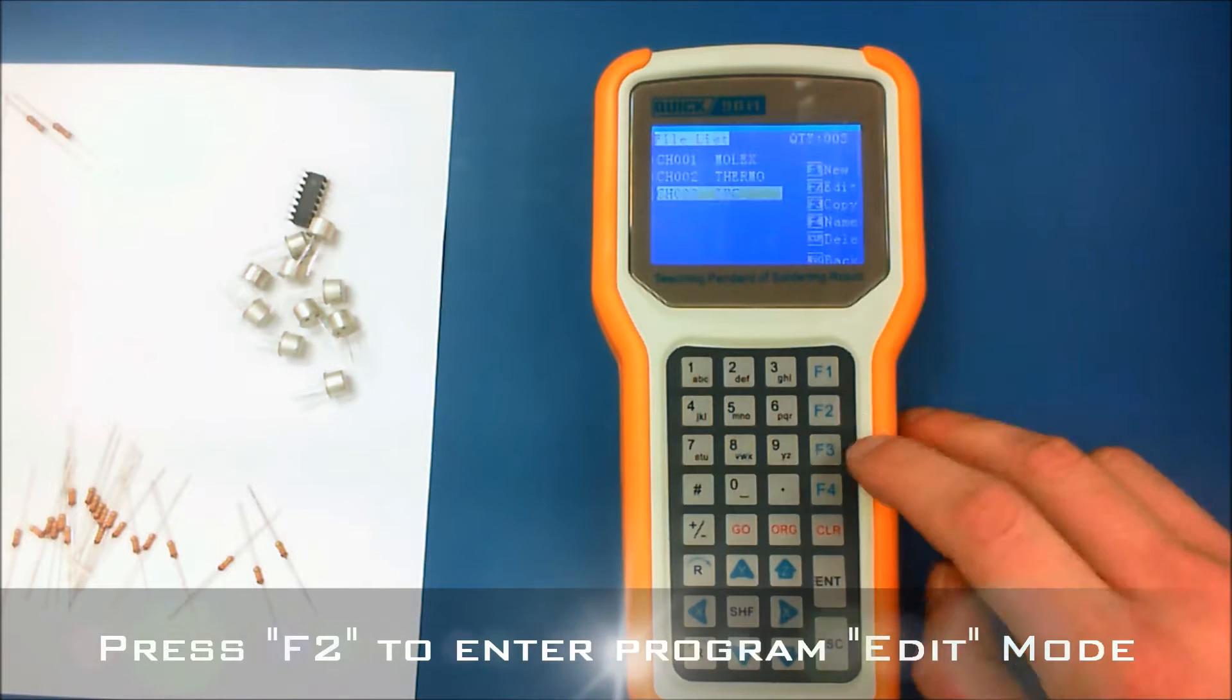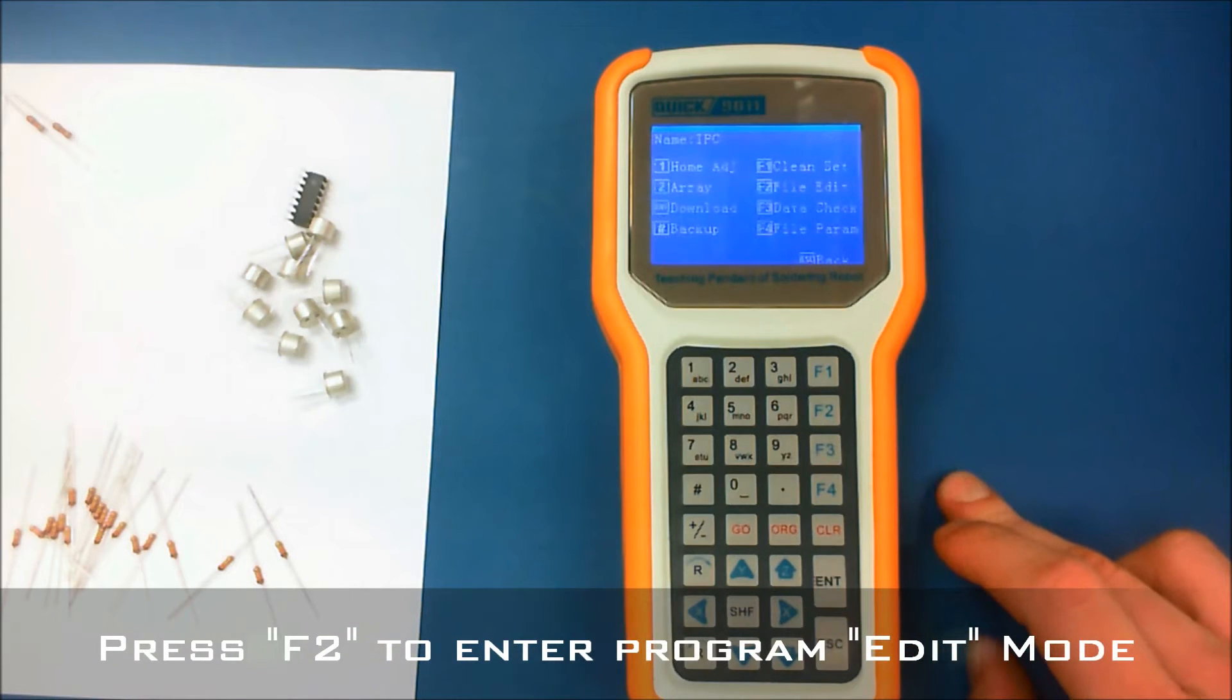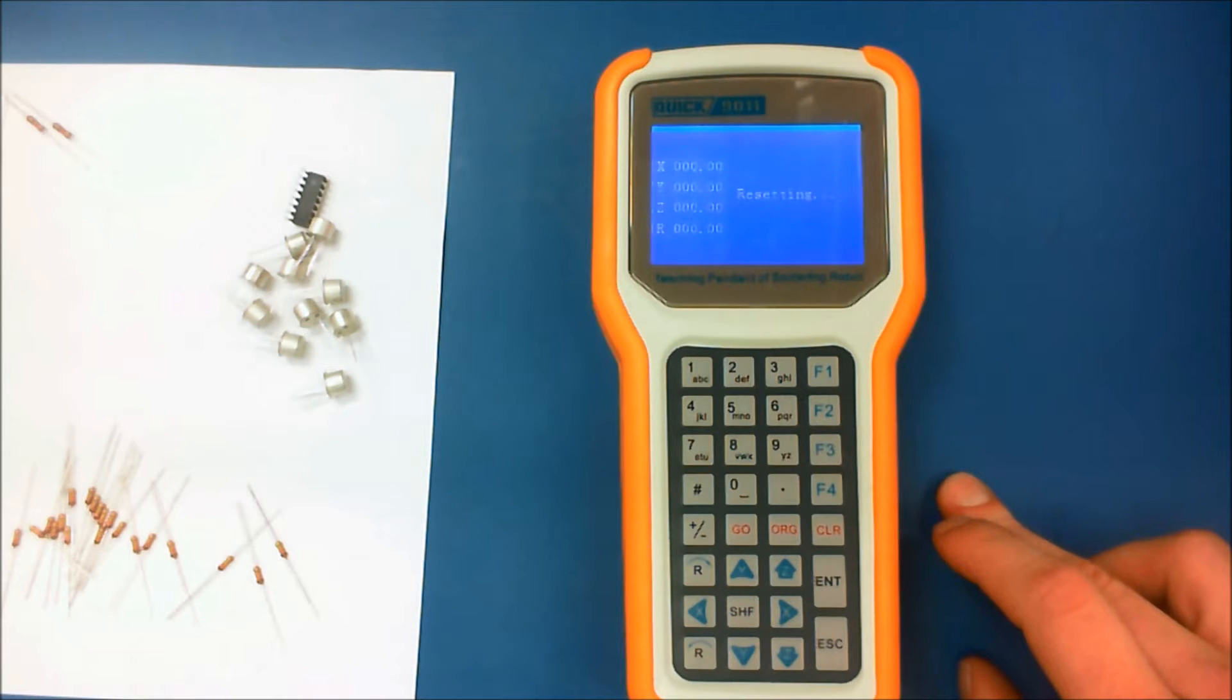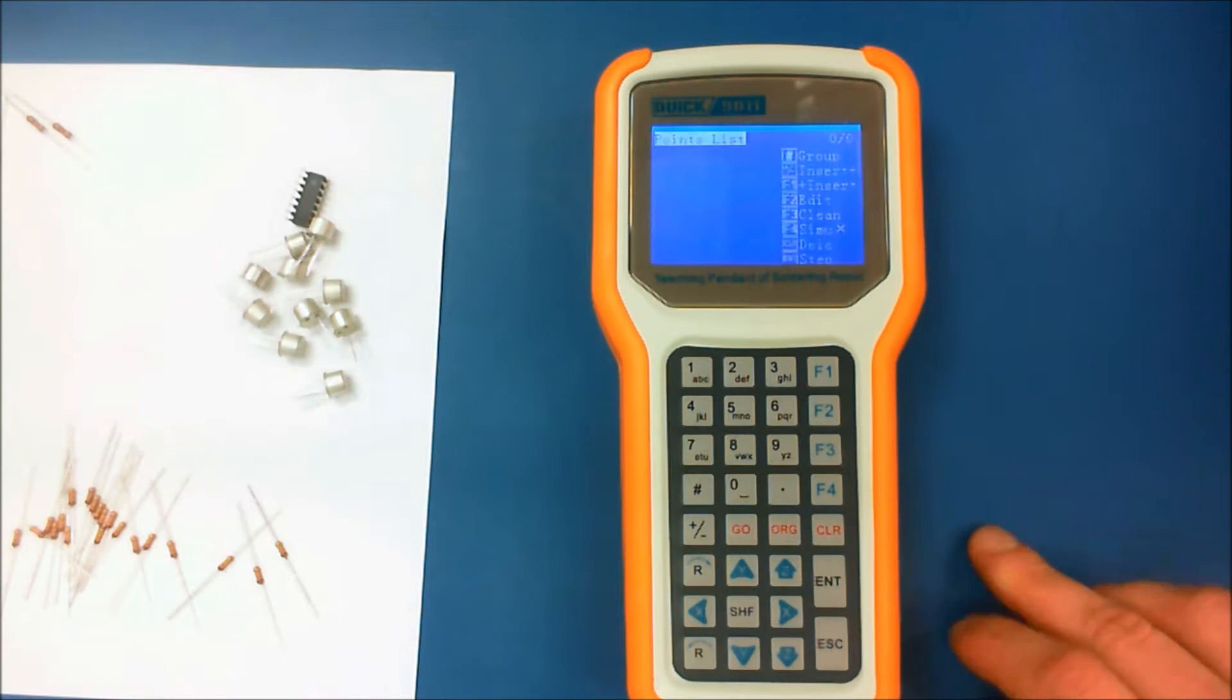Now to begin editing on the right side we'll see F2 edit. F2 again for file edit. This will in fact origin the machine and allow us to begin programming.